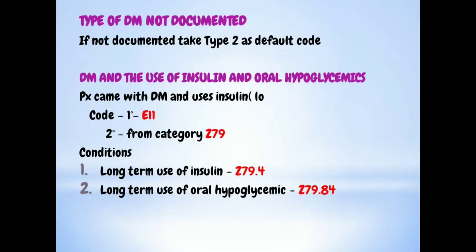The first important guideline: if the type of diabetes mellitus is not documented by the provider, we default to Type 2 diabetes. If the documentation does not clearly indicate the type, always assume Type 2 as the default. Keep this in mind — it is useful for elimination-method questions.